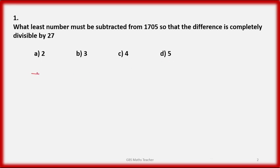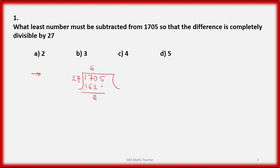Without delay, let's solve this. Divide 1705 by 27. 27 times 6 gives 162. Then 27 times 3 gives 81. After subtracting, the remainder is 4.